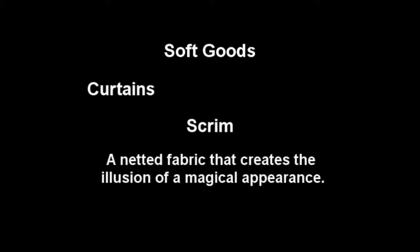The scrim is a soft good used for special effects. It's a tightly netted fabric which, if lit from the front, looks like an opaque or solid surface. When lit from the rear, the scrim can create the illusion that the object behind it is appearing from nowhere. The scrim creates a gauzy, dreamlike effect for the objects shown from behind.